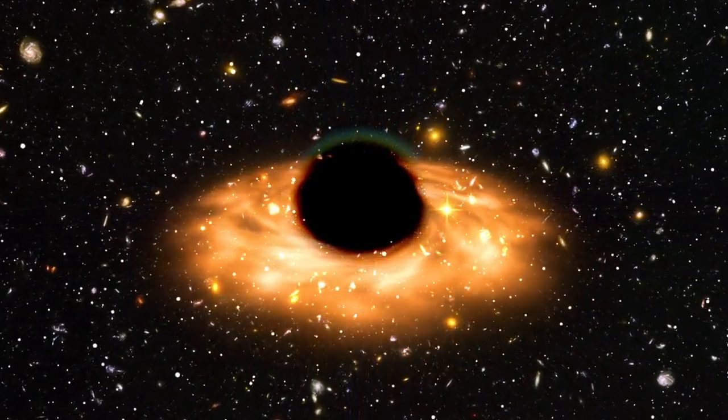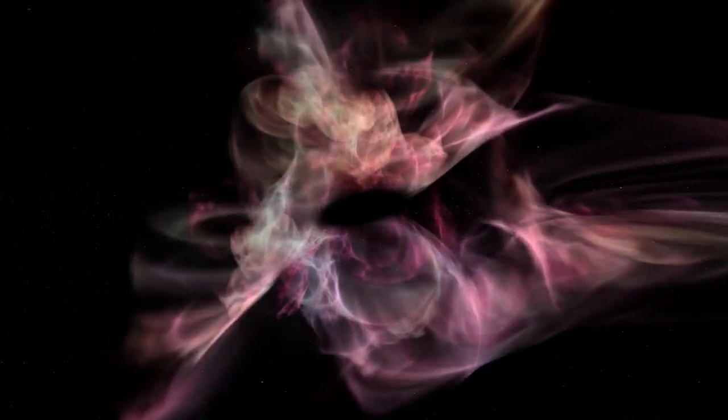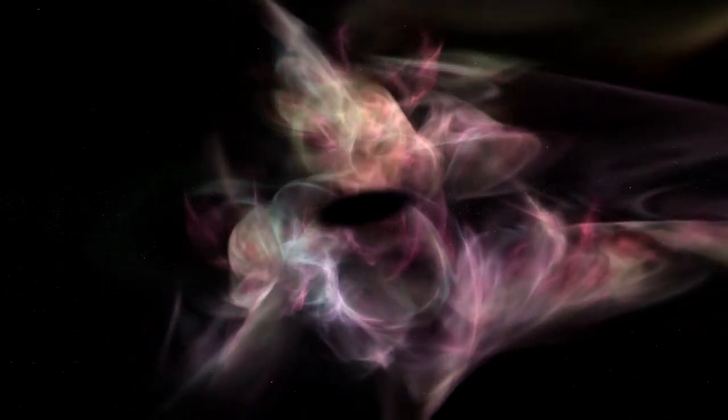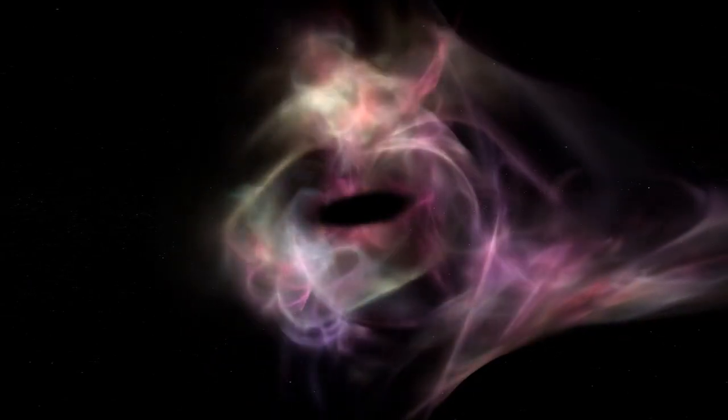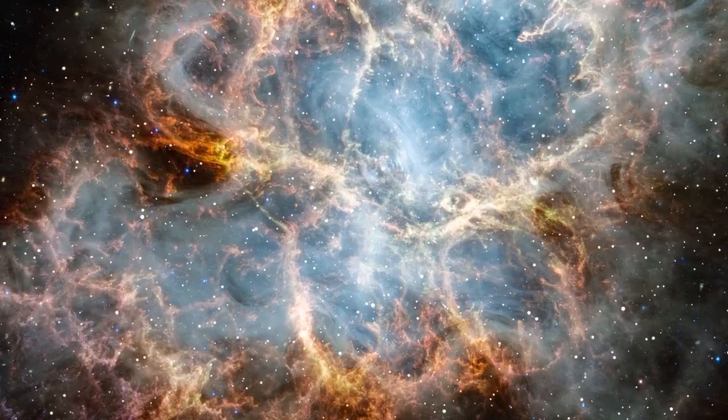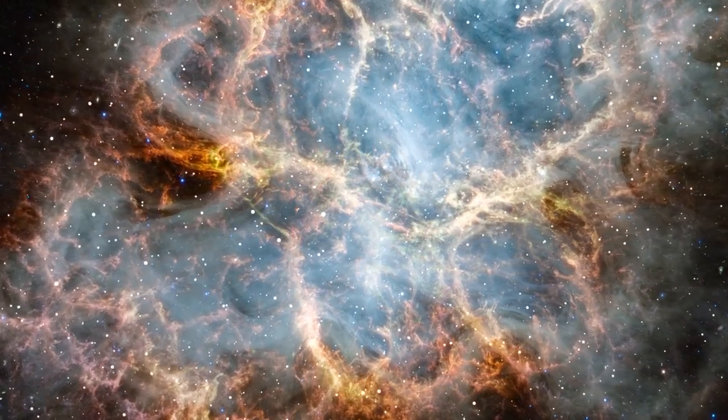The supermassive black hole in UHZ1 is fascinating not just for its mass but because it's the first instance of what Yale University scientists call an outsize black hole. They theorize that such black holes could form from the collapse of massive gas clouds, and now there is evidence supporting this hypothesis. This discovery is just one of what promises to be a long list of groundbreaking research about the early universe that Webb will continue to deliver.